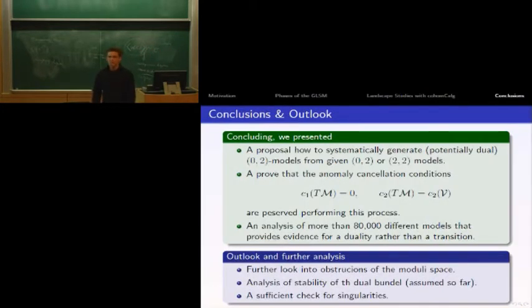Let me conclude. We presented a proposal of how to systematically generate potential 0-2 models from given 0-2 or 2-2 models. We proved that our anomaly cancellation conditions stay satisfied by this process. We did analysis of a large landscape of models to support that there might be a duality rather than a transition.